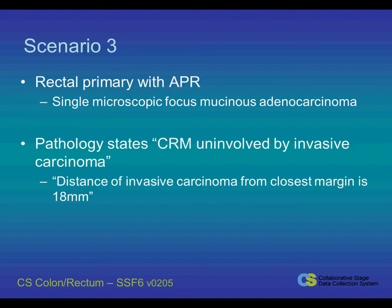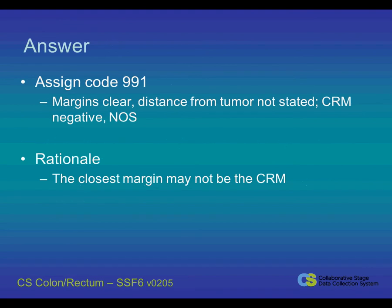In this scenario, the CRM is negative, but the distance is described only as the closest margin. While there is a distance described in the pathology report, it does not specifically state that it is the distance to the CRM. The CRM may not be the closest margin, and you cannot assume that is what the pathologist meant. In this instance, you know the CRM is negative, but you do not know the exact measurement from the tumor to the margin.